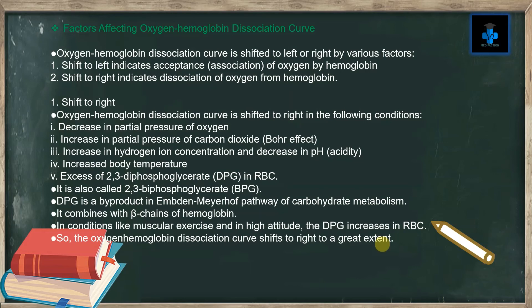2,3-DPG is also called 2,3-bisphosphoglycerate. It is a byproduct of the Embden-Meyerhof pathway, seen in carbohydrate metabolism. It combines with the beta chains of hemoglobin. In conditions like muscular exercise and at high altitude, 2,3-DPG increases in red blood cells.